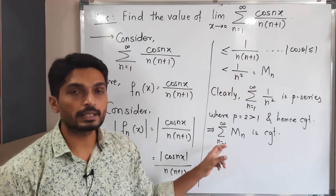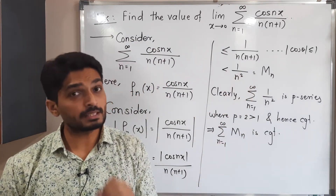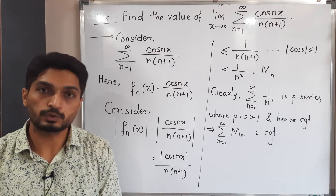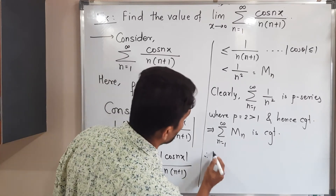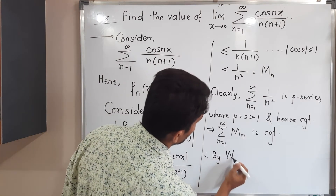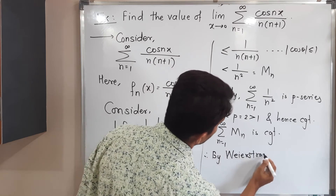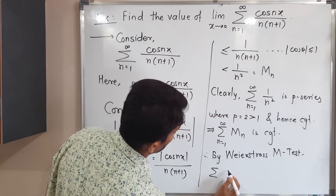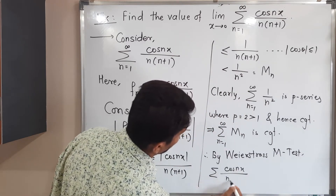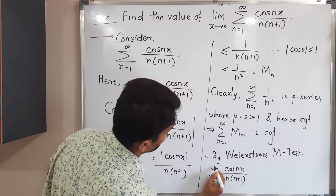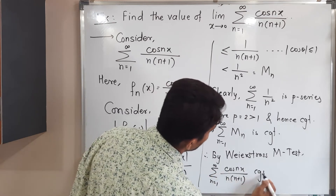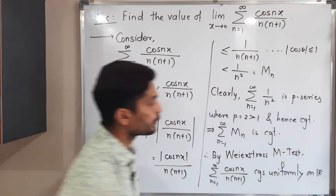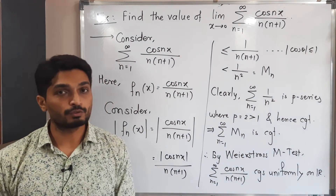Since the summation of M_n is a convergent series, the Weierstrass M-test says that if the M_n series is convergent, then the given series of functions also converges uniformly. Therefore, by the Weierstrass M-test, the summation of cos(nx) / [n(n+1)] running from 1 to infinity converges uniformly on ℝ. In this way, we proved the given series of functions converges uniformly.